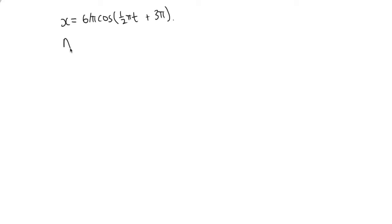So we know that the amplitude is equal to this number at the front, 6 on pi. The omega is equal to 1 half pi.